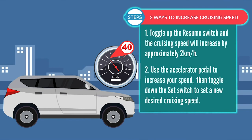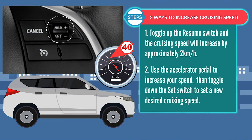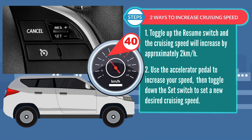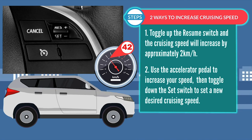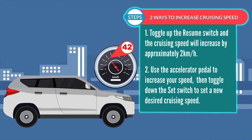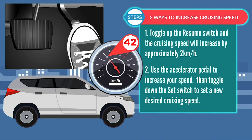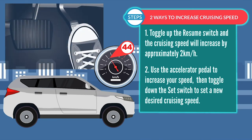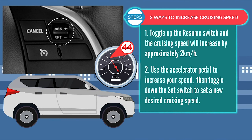There are two ways to increase the set speed. First, toggle up the Resume switch and the cruising speed will increase by approximately 2 kmph per click. You can also use the accelerator pedal to increase your speed, then toggle down the set switch to set a new desired cruising speed.